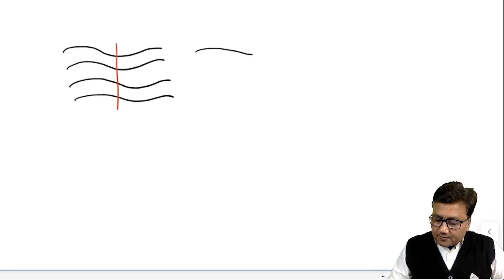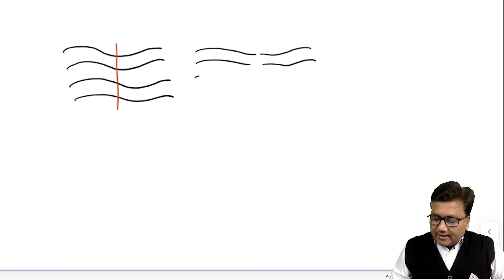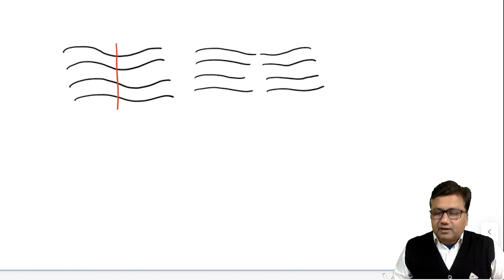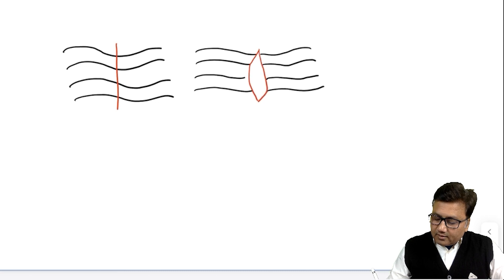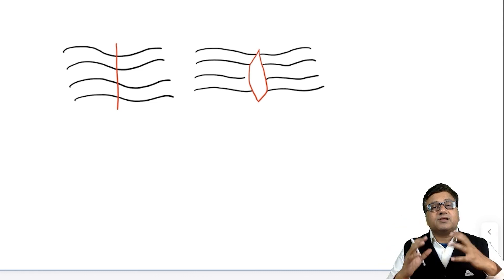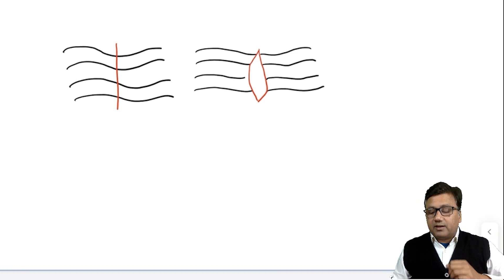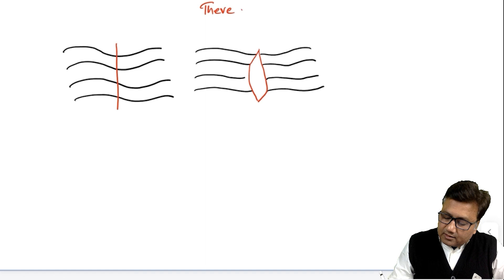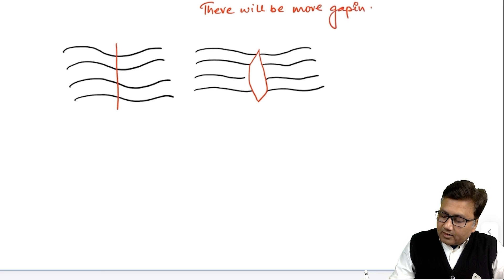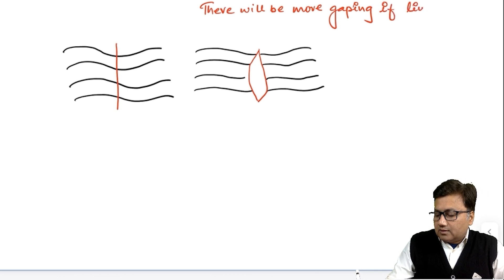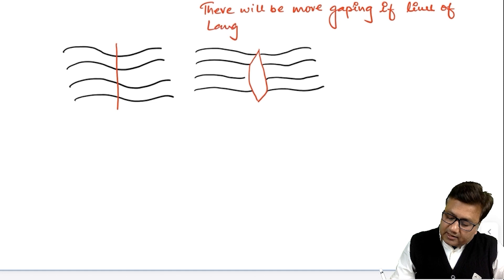When Lines of Langer are cut perpendicularly, the fibers will retract after being cut. Due to the perpendicular cutting of Lines of Langer, the wound will spread more — more gaping will be seen. There will be more gaping if Lines of Langer are cut perpendicularly.